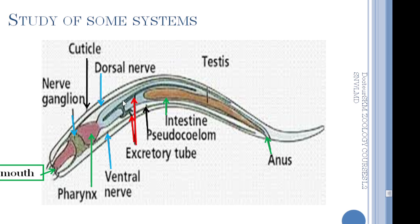The excretory system is composed of two canals that end with an excretory pore. Also, the animal contains a cuticle, which is a covering structure that covers all the body and is very specific to Ascaris.